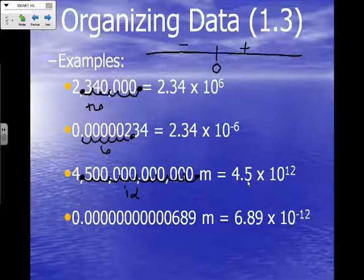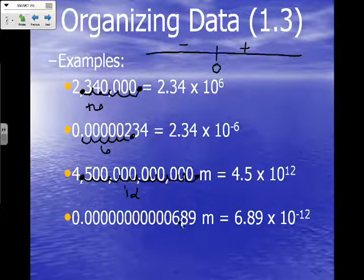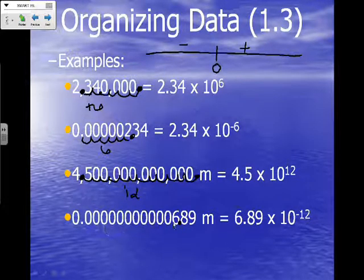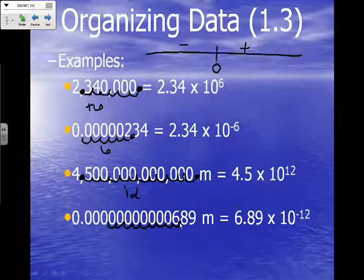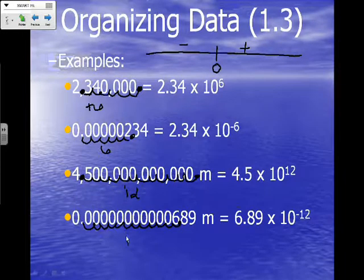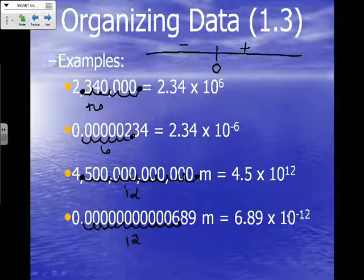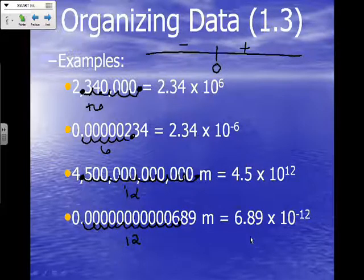Our last example is a very small number. We write our new decimal; the old decimal is already here. We count the jumps: one through twelve — twelve jumps. However, we went to the left counting, so our exponent is going to be a negative 12. The answer is 6.89 times 10 to the negative 12.